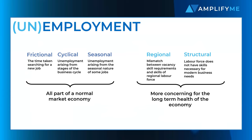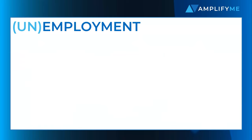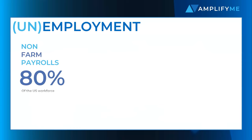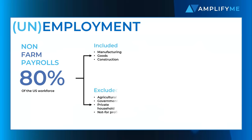Finally, markets tend to react on the release of new employment and unemployment data. One of the most hotly anticipated and traded data releases are US non-farm payrolls, coming out on the first Friday of every month. Non-farm payrolls survey about 80% of the workforce, excluding all agriculture, government, private household, and charity workers.